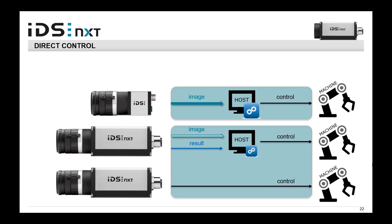Last but not least, we can directly control machines. With the interfaces on the IDS NXT camera family, we can communicate directly with machines and send commands based on inference results — is this bell pepper okay or not? Do we see a bell pepper, cucumber, or zucchini? All of this is possible with IDS NXT, so we can get completely rid of the PC. And still, if necessary, we can transfer images to a host PC and visualize the results.